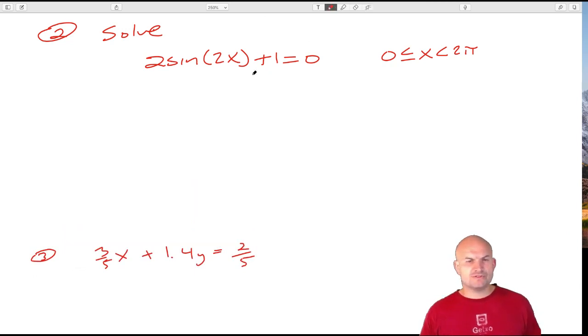Alright, so let's go into some trigonometry. The main important thing here: we want to solve 2sin(2x) + 1 = 0, and we want to solve for all x values between 0 and 2π.